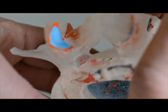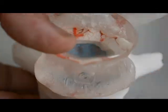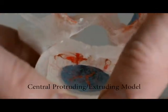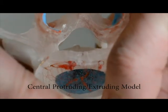The third model is a central protruding nucleus, which shows central occlusion of the spinal canal under dynamic load.